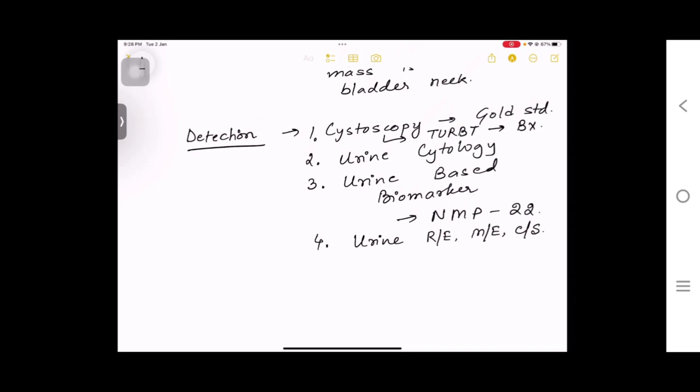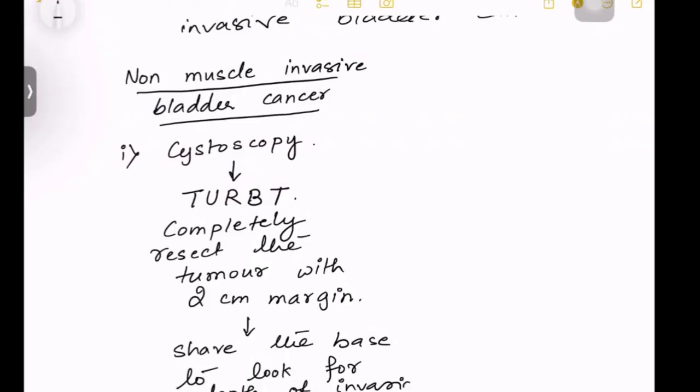What investigations will you do? Because it's bladder-related, you'll do cystoscopy, and that is the gold standard. This is related to cancer, so we have to study the nature of cells, so you'll do cytology or urine cytology. Third, you have to do some urine-based markers like NMP22, and fourth, you'll do routine examination of urine, microscopic examination, and culture sensitivity.